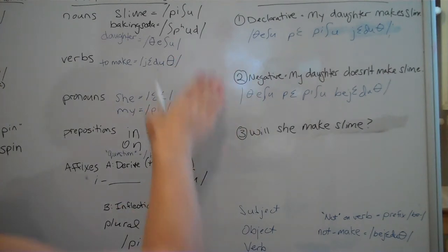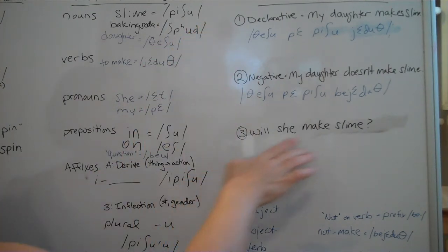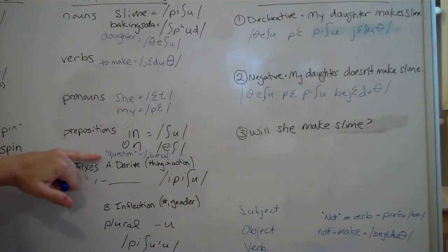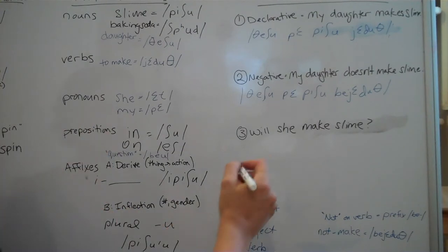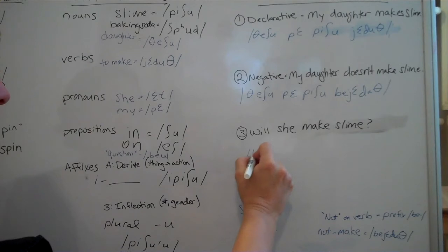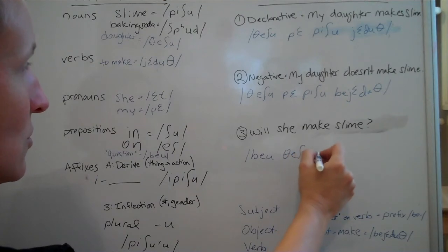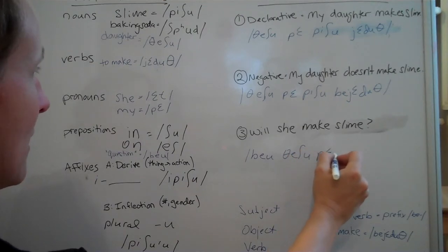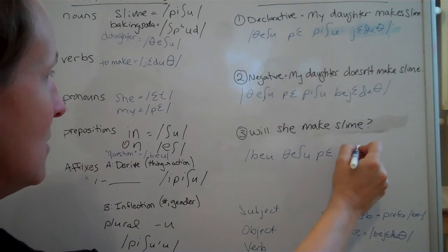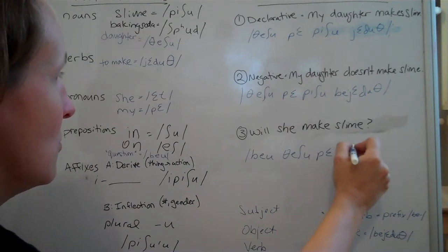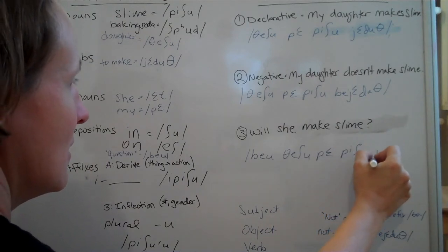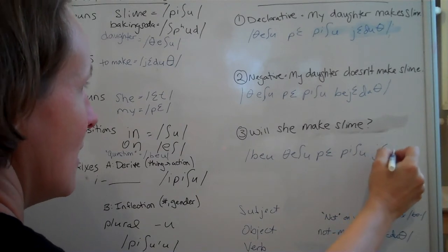And then I want to turn this into a question. Will she make slime? And I've created a preposition that is a general question. It can stand for any sort of questioning of any sort. And so I'm going to start my sentence with bayu, bayu, pishu, pe, pishu, yeduth.